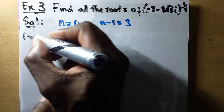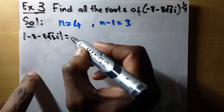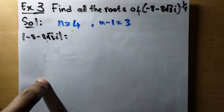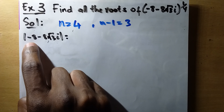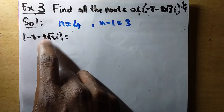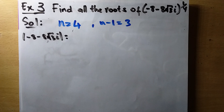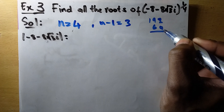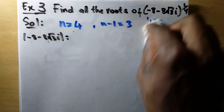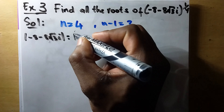You are going to start by finding the modulus of the complex number -8 minus 8√3·i. This is going to be the square root of 8² plus (8√3)², which is √(64 + 192) = √256 = 16. So the modulus is 16.